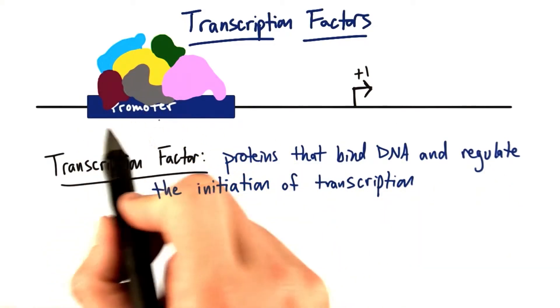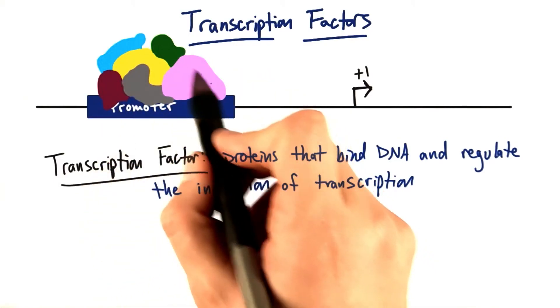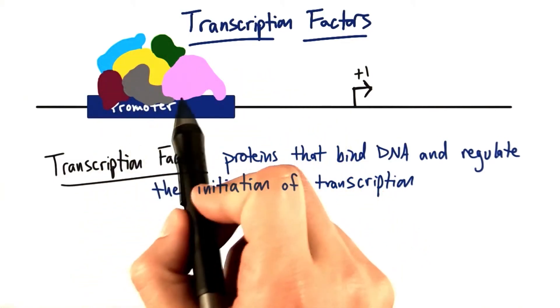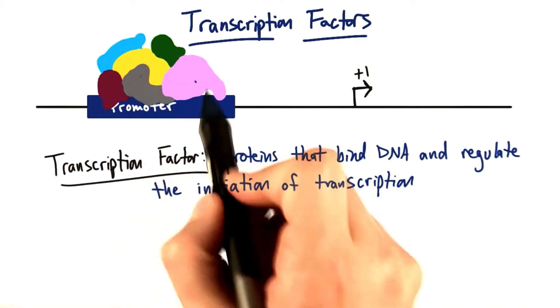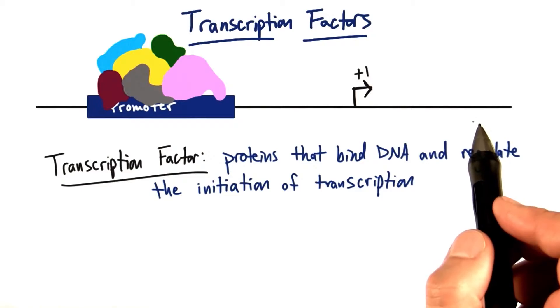Now, not only can these proteins interact with the DNA of the promoter region, but they interact with each other as well. You can sort of see that depicted here. They're all bound to one another, and through these many interactions, they're able to facilitate the overall outcome for this particular gene.